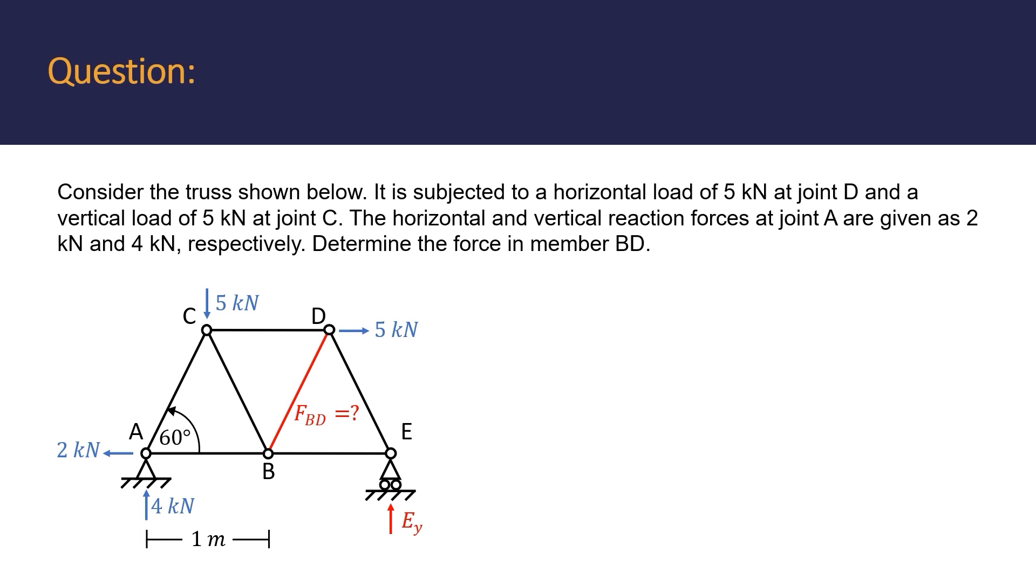Specifically, a 5 kN horizontal load at joint D, a 5 kN vertical load at joint C, and known reactions at joint A. Joint E's vertical reaction force is unknown, and our task is to calculate the force in member BD. There are multiple possible correct answers given to us from A to D.